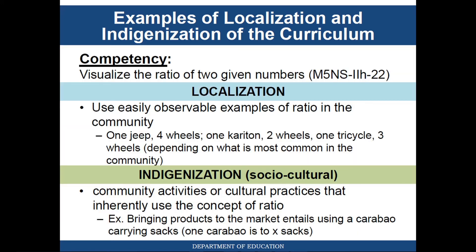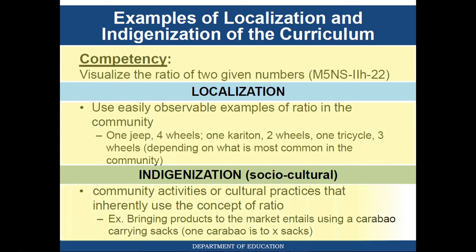Here is another example. The competency is 'visualize the ratio of two given numbers.' Localization can be done by using easily observable examples of ratio in the community. Indigenization may include community activities or cultural practices that inherently use the concept of ratio. For example, bringing products to the market entails using a carabao carrying sacks. Learners can then create a ratio of 1 carabao to x sacks.